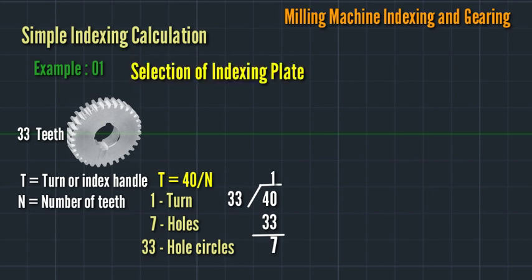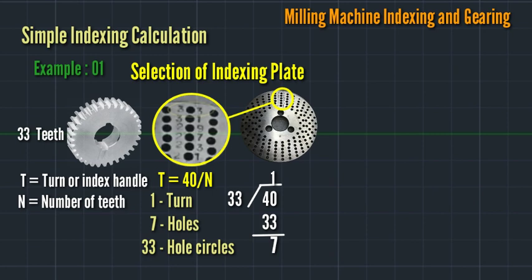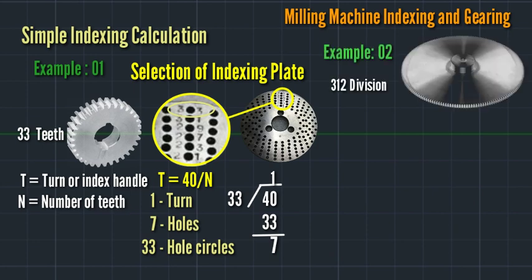Let's proceed to example 2. In this example, we have 312 gradations. We can use the formula: turn or index handle T equals 40 divided by number of teeth. Since 40 is less than the division of 312, we can use this type of calculation method. What two numbers can we multiply to get 40?